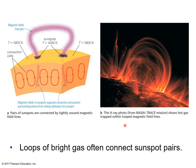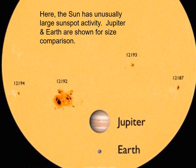Over to the right, this x-ray photo shows hot gas trapped within the looped magnetic field lines, spiraling around. Loops of bright gas often connect sunspot pairs. You can see in this diagram there's a sunspot and there's another sunspot — often, not always, but often they appear in pairs: one sunspot where the magnetic field emerges from the surface, and then another one where it goes back in. In this picture, shown with Jupiter and Earth for size comparison, the Sun has unusually large sunspot activity — this whole sunspot region is about the size of Jupiter.